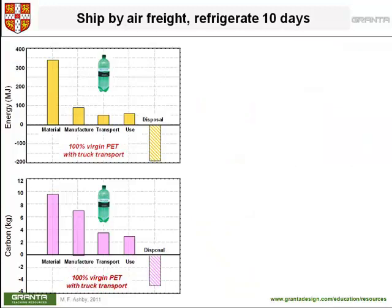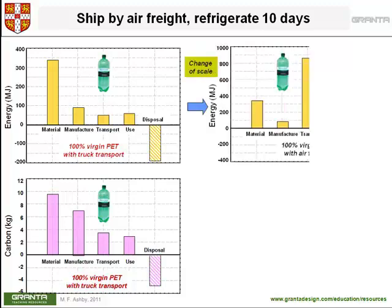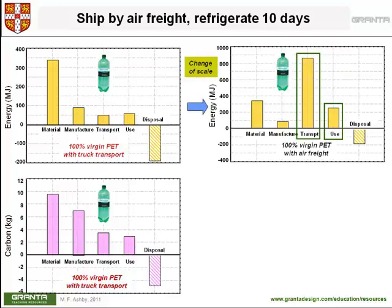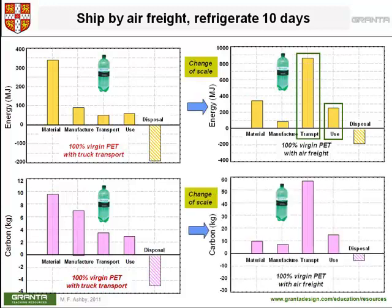Here's one final scenario — not a very sensible one. Supposing instead of shipping the bottles by truck, they were air freighted to the UK from France. And instead of refrigerating for two days, we had a long weekend and they were refrigerated for ten days. The transport phase goes up enormously — the energy associated with air freight is much larger than that associated with truck transport. Refrigerating for ten days multiplies the use energy by a factor of five. The consequence is that the dominant phase of life is now not the material, as it was at the beginning — it's now transport and use. The obvious thing to do is to revert to a mode of transport which is much less energy intensive.